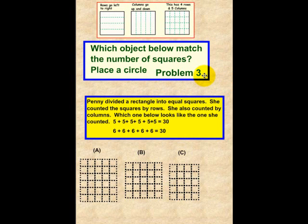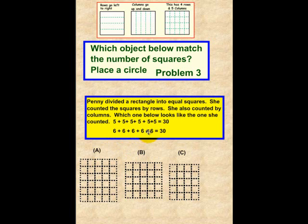Problem number 3 — we should have a new student up at the video. We are solving problems in different formats. Which object below matches the number of squares? Place a circle. Penny divided a rectangle into equal squares. She counted the squares by rows and also by columns. We have 5+5+5+5+5+5 equals 30, and 6+6+6+6+6 equals 30. Which one of these objects below represents this format? Please solve this problem.